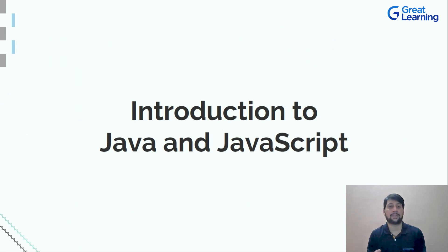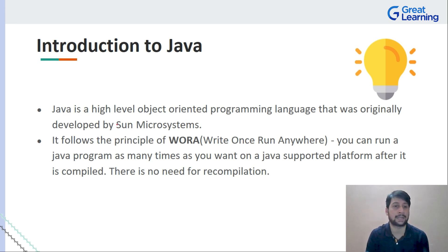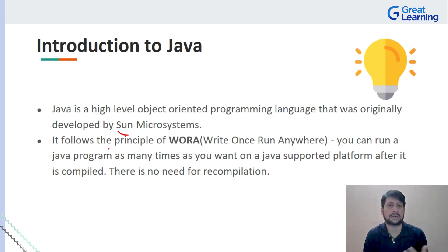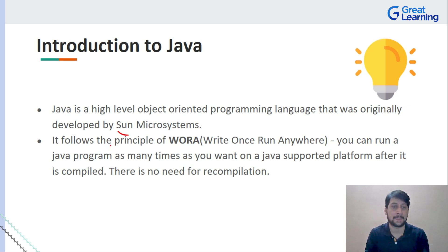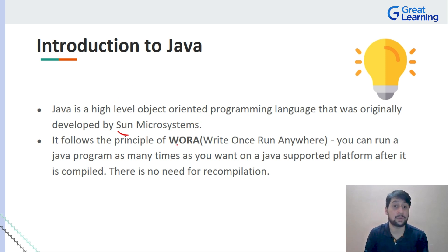Let's talk about the introduction first. Java is a high-level object-oriented programming language that was originally developed by Sun Microsystems. It was originally developed for the digital cable industry, but later it was decided that Java should be a high-level object-oriented programming language. It follows a principle called WORA.